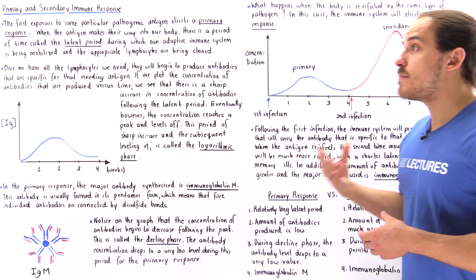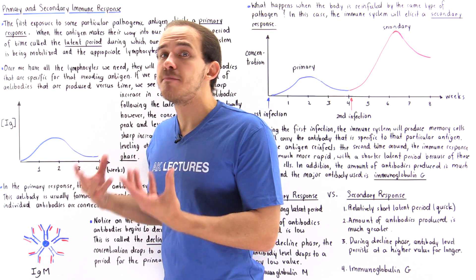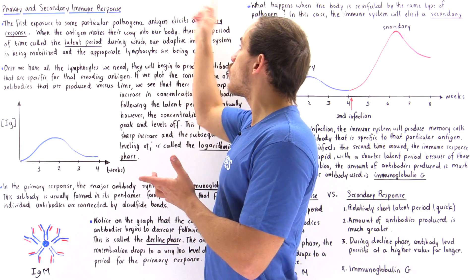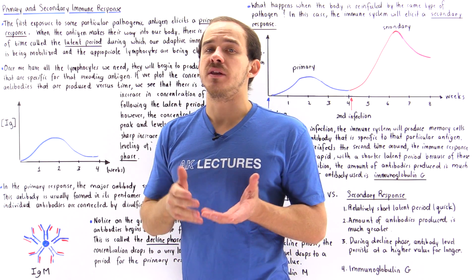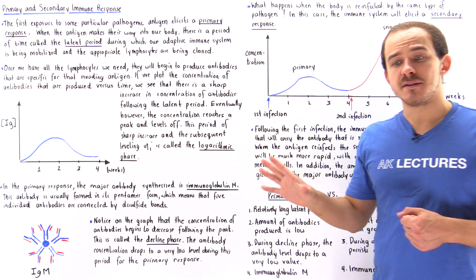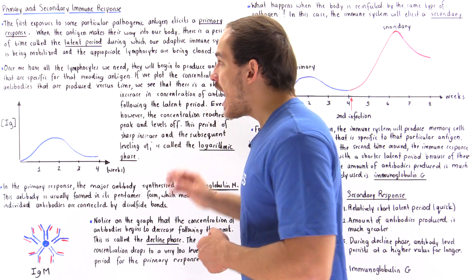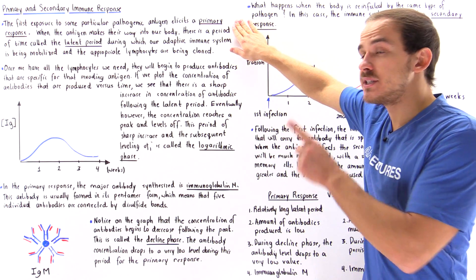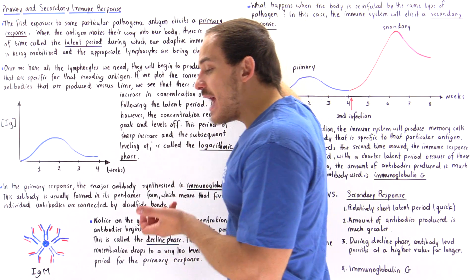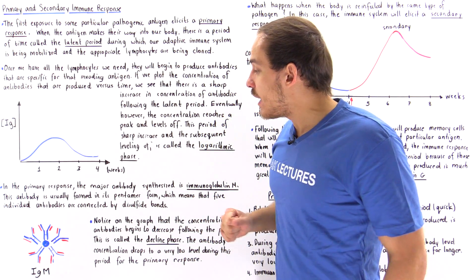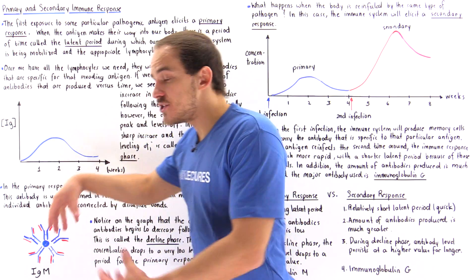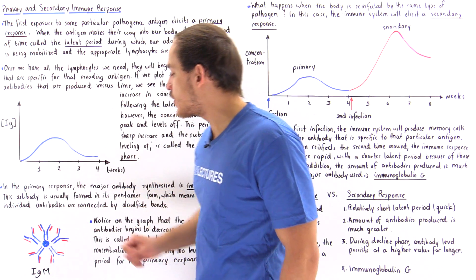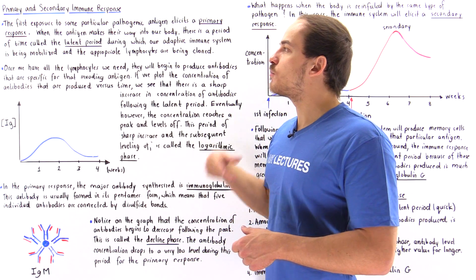The primary immunoglobulin used in the primary response — and in general the major type of antibody used for all primary responses — is immunoglobulin M. We have five different classes of antibodies, and it is immunoglobulin M that is produced predominantly in the primary response. Immunoglobulin M forms a pentamer, meaning five individual antibodies orient together to create this pentamer structure, held together by disulfide bonds.